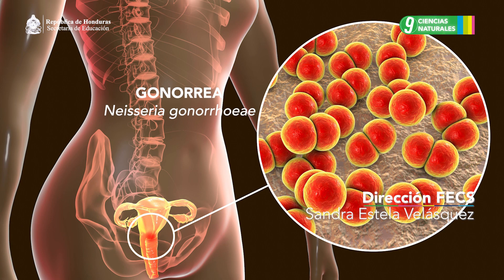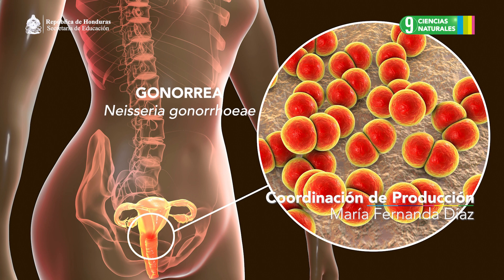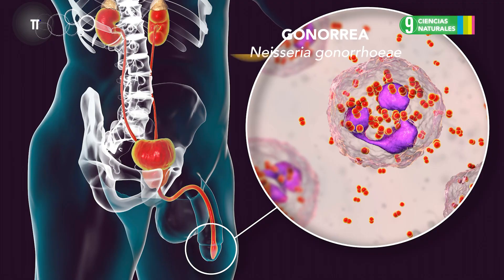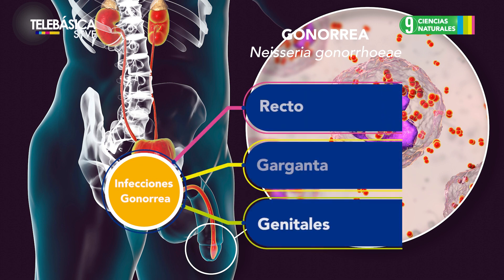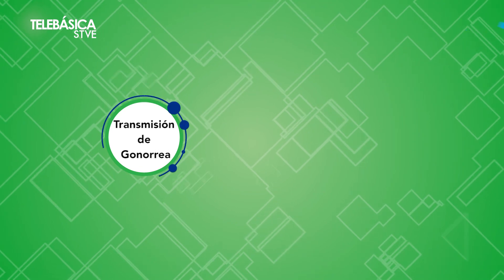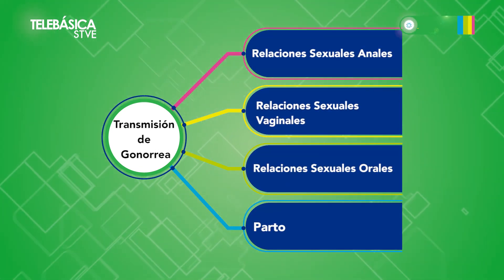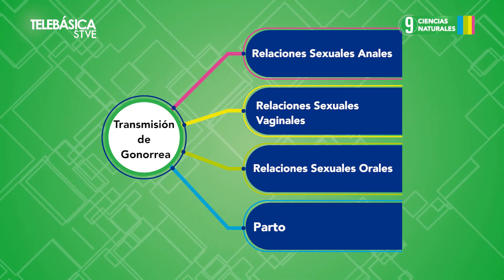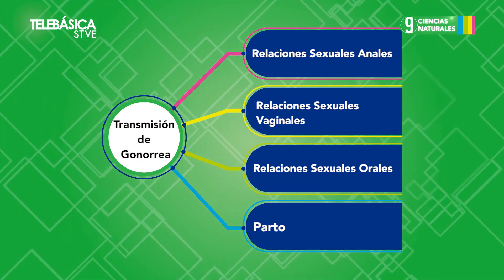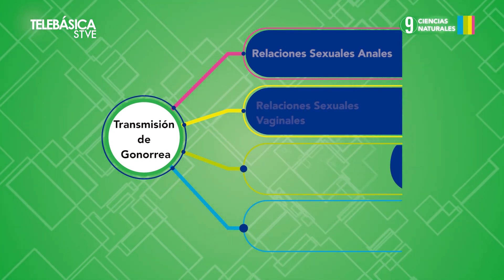Esta es una ITS que puede infectar tanto a los hombres como a las mujeres. Es causada por la bacteria Neisseria gonorrhoeae. Puede causar infecciones en los genitales, el recto y la garganta. Es una infección muy común, especialmente en las personas jóvenes de 15 a 24 años. Se puede contraer gonorrea al tener relaciones sexuales anales, vaginales y orales con una persona que tenga esta enfermedad. También, una mujer embarazada con gonorrea puede transmitírsela a su bebé durante el parto.